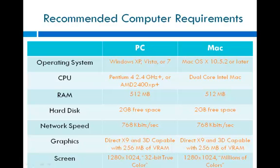RAM, hard disk, network speed, graphics, and screen are all the same except for the wording on screen. On a PC at 1280x1024, it is called 32-bit true color. On a Mac, it is called millions of colors.